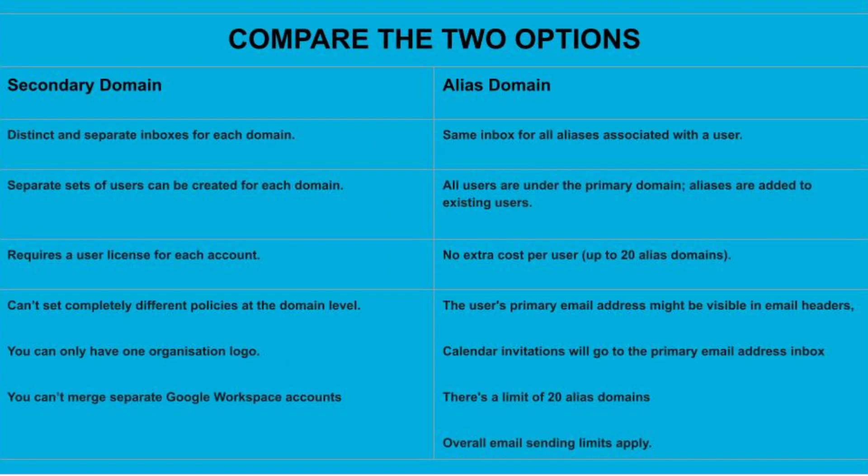Let's compare secondary and alias domains side by side. Firstly, email addresses: in a secondary domain you have distinct and separate inboxes for each domain; in an alias domain, one user will have multiple addresses that all go to the same inbox. In user management, in a secondary domain, separate sets of users can be created for each domain — they each have separate logins and potentially separate Google Drive storage. In an alias domain, all users are under the primary domain and aliases are added to existing user accounts within your primary domain.